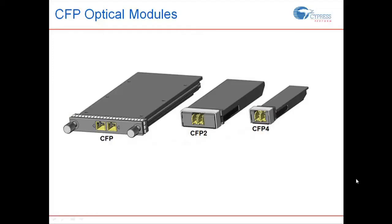Internet traffic is constantly increasing and is expected to quadruple between 2010 and 2015. To keep up with this ever-increasing demand, the internet is being upgraded. CFP, CFP2, and CFP4 Optical Modules deliver 100 gigabits per second data rates to meet this demand.